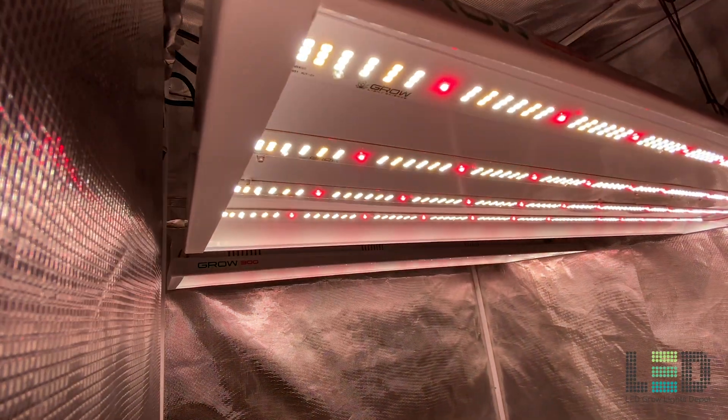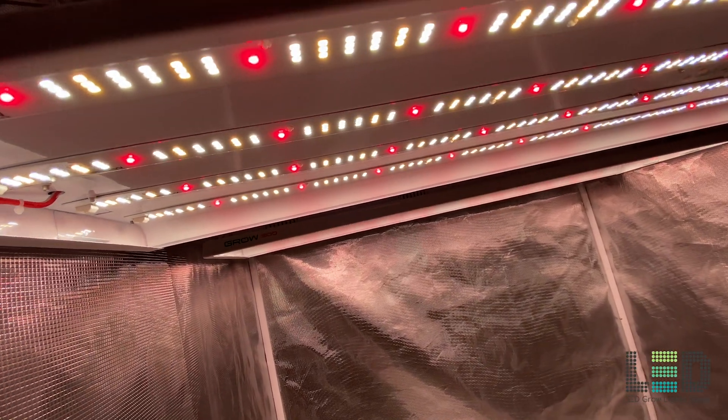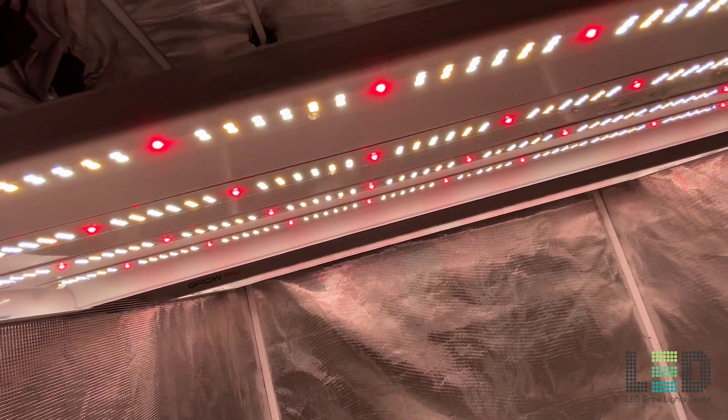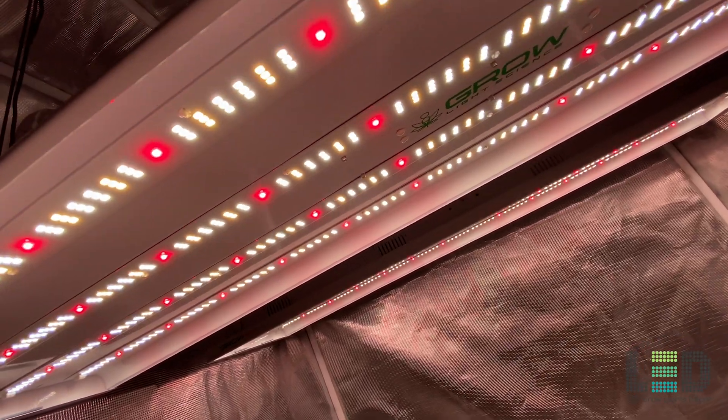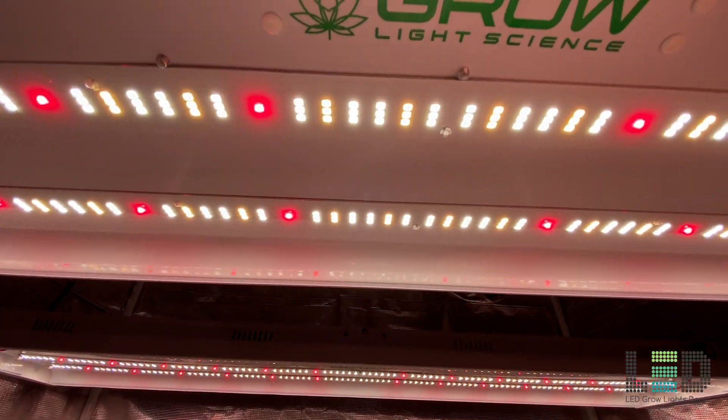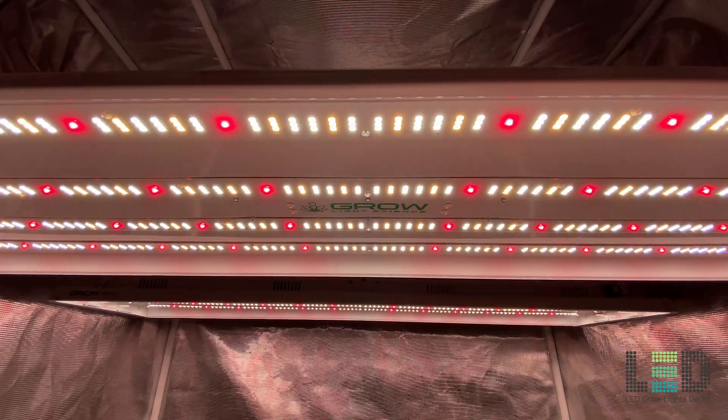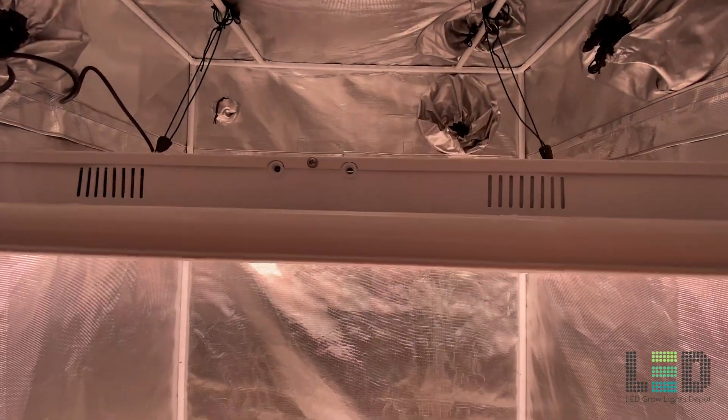Expect a heat output of 1,094 BTUs per hour from a single fixture or 2,189 BTUs from two fixtures. That's 35% less heat than a 1,000 watt HID fixture. The thermal management on the Grow 300 is excellent, especially compared to fixtures with denser diode configurations. So expect a long diode lifetime.